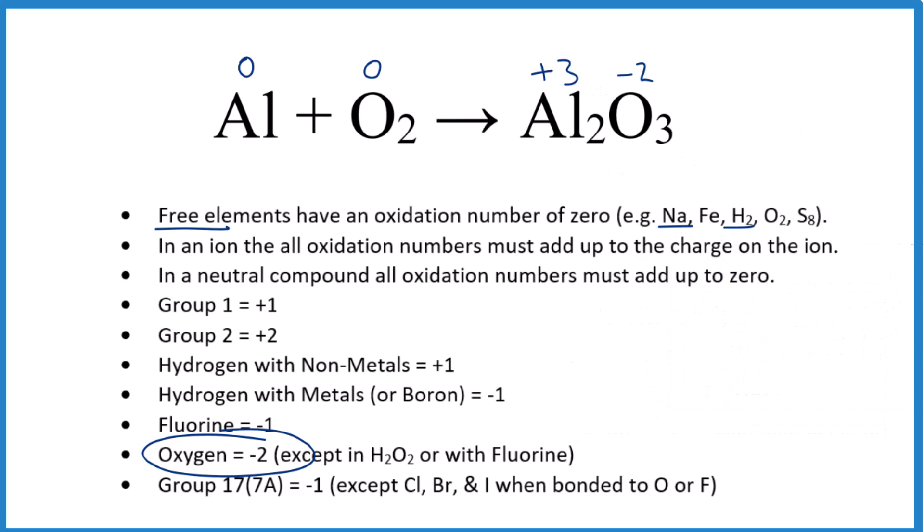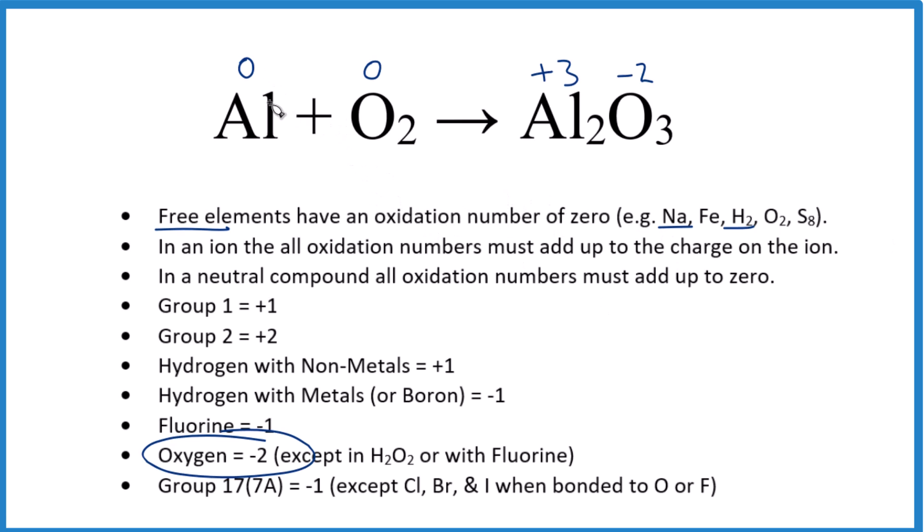Okay, so we have our oxidation numbers here. Now we can see what happened. It looks like the aluminum went from zero to three plus, the oxygen went from zero to negative two. So the zero to negative two, that got smaller. So I know that that's been reduced.